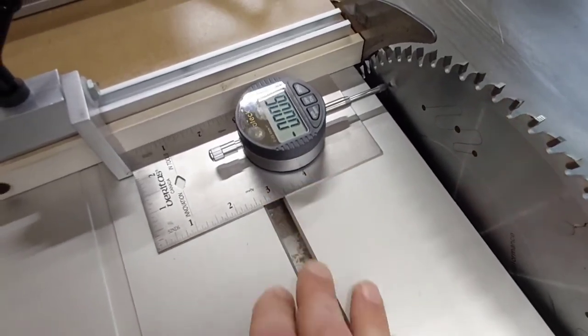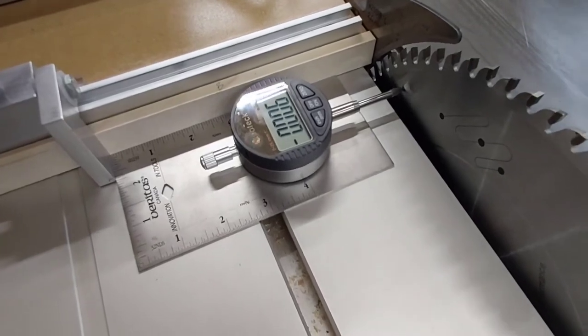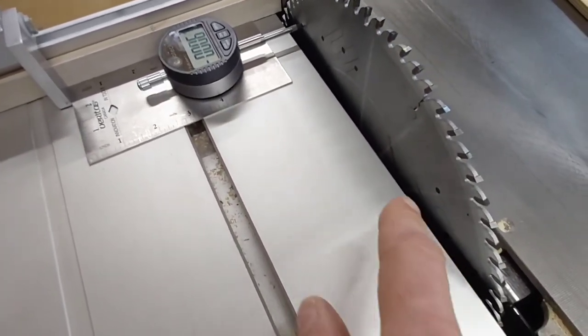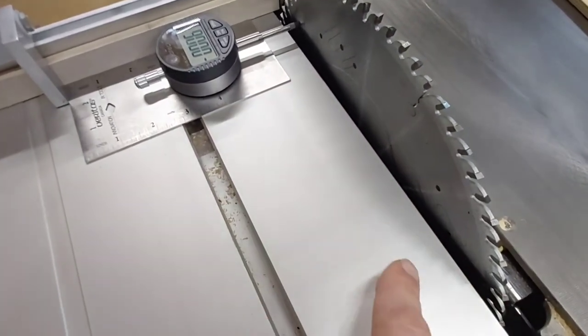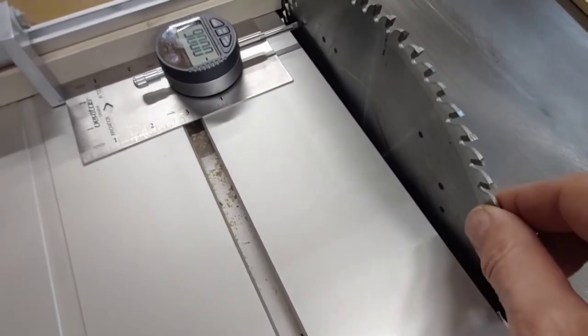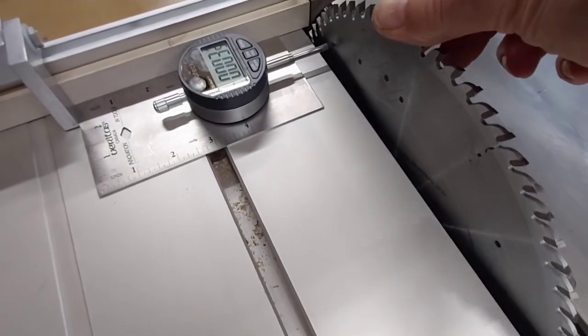But that's not exactly right because if there's any run out in this blade, we've accounted for that run out as well. So what I need to do is rotate the blade so that the same teeth or the same area is touching the indicator.